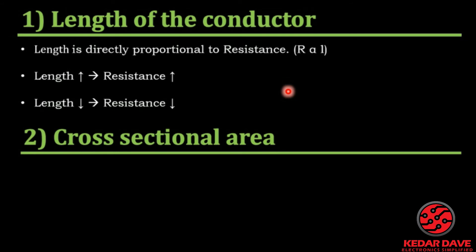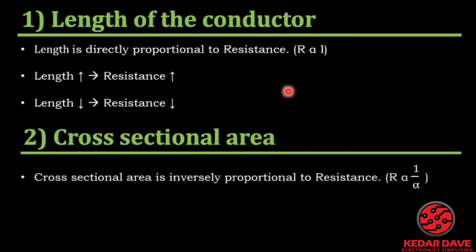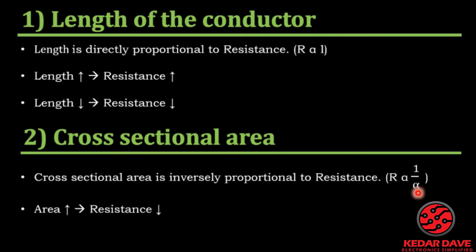The second factor is cross-sectional area, which is inversely proportional to resistance. That means R is inversely proportional to the cross-sectional area, denoted as alpha or A. This way, the cross-sectional area will affect the resistance value.